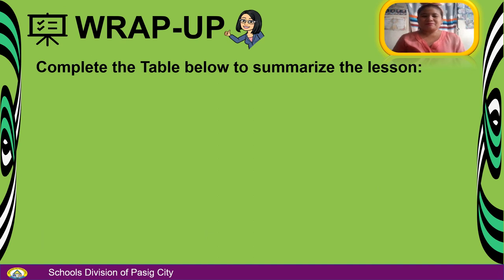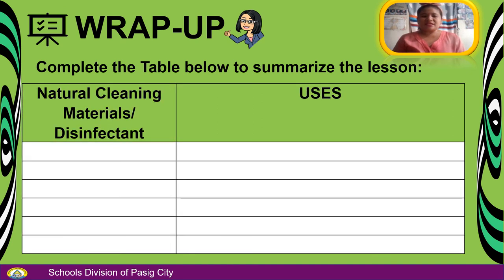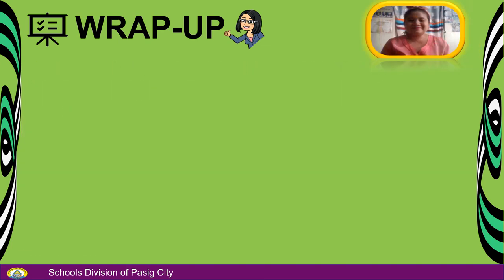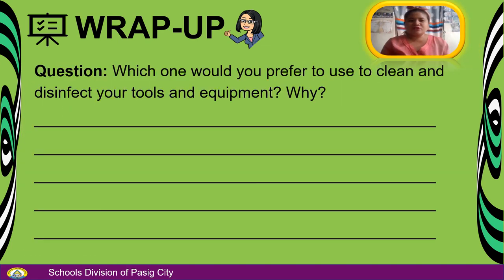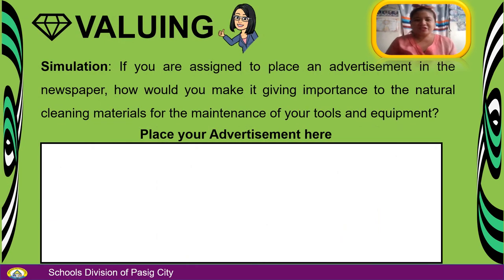Let's proceed to wrap up. Complete the table below to summarize the lesson — the first column is natural cleaning materials and disinfectants, and the second column is their uses. Then answer the question: which one would you prefer to use to clean and disinfect your tools and equipment, and why? For the appreciation activity, simulate a situation: if you were assigned to place an advertisement in a newspaper, how would you make it giving importance to natural cleaning materials for the maintenance of your tools and equipment?